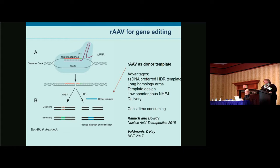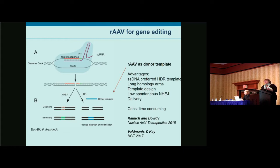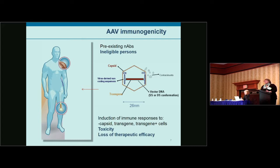AAV is also useful for gene editing, not only to deliver gene editing tools like CRISPR-Cas9, but also because AAV is a very good donor template for knock-in using CRISPR-Cas or other gene editing approaches. The single-stranded DNA of AAV is a preferred template for homologous-directed repair, with long homology arms available for insertion, a lot of room for template design, and a low spontaneous non-homologous end-joining background. In the future, AAV may be very interesting for in vivo gene editing.